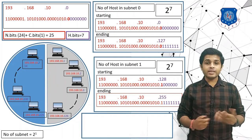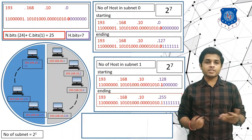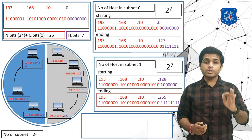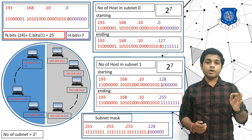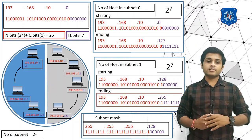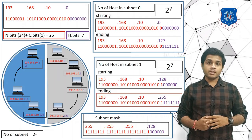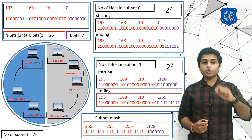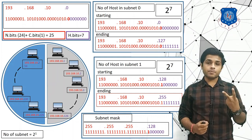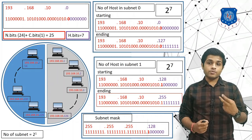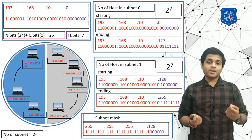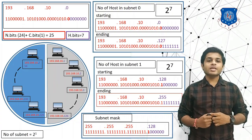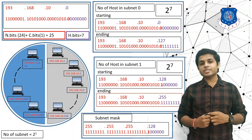To find the subnet mask, set all network bits including the converted bits to 1 and all host bits to 0. If we convert one bit from host to network we get 2 subnets. How many subnets result from converting two bits will be covered in the next lecture. That's it for today's session — if you have any doubts, ask in the comment section. Thank you.